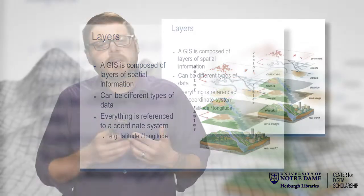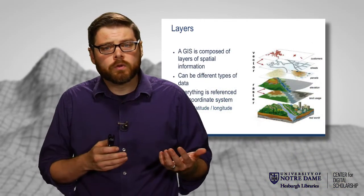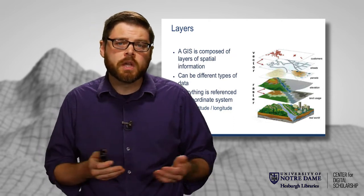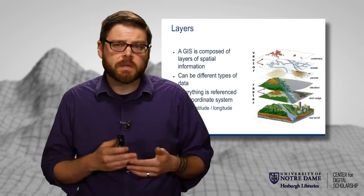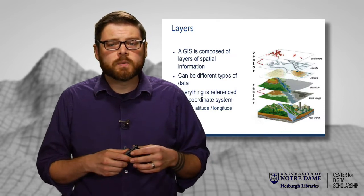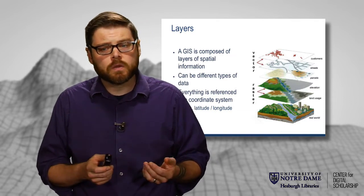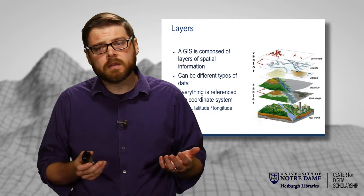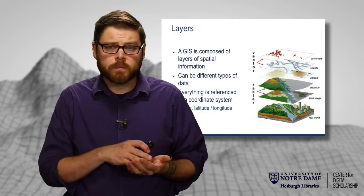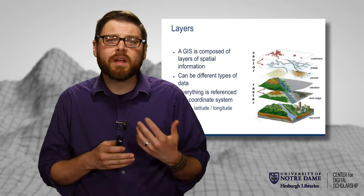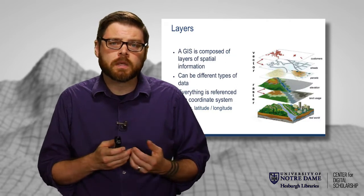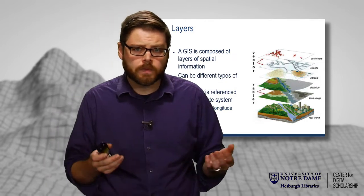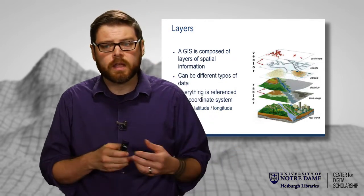All of these combine together to model something about the real world — it could be how we route delivery trucks to get to particular customers, it could be erosion potential, or any number of different things. One of the most important things to keep in mind is that in order to overlay these layers perfectly, we need to have them all referenced in the same coordinate system, so the computer can know where individual things are across the different layers.